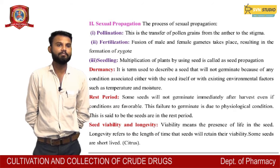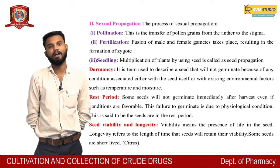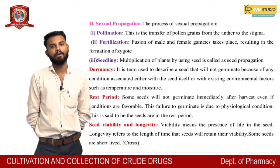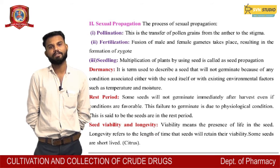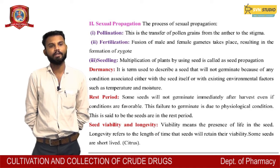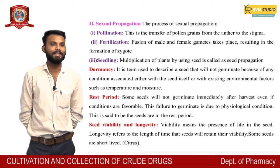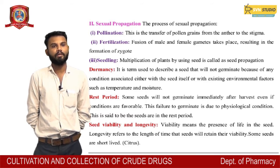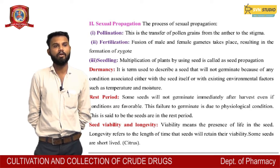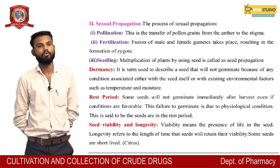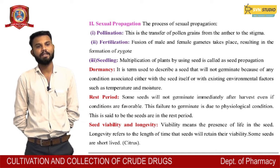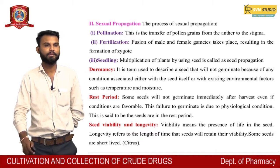Dormancy is the term used to describe a seed that will not germinate because of any condition associated either with the seed itself or with existing environmental factors such as temperature and moisture. Rest period: some seeds will not germinate immediately after harvest even if conditions are favorable. This failure to germinate is due to the physiological condition of the seed, referred to as the rest period. Seed viability means the presence of life in the seeds. Longevity refers to the length of time that seeds will retain their viability. Some seeds are short-lived.